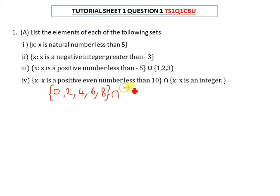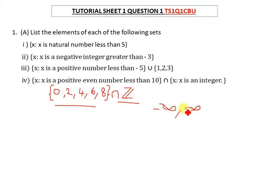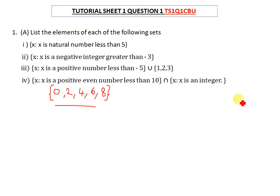When you find the intersection between {0, 2, 4, 6, 8} and the set of integers — which runs from negative infinity to positive infinity — all elements of our even number set are already integers. So the intersection gives us the same set: {0, 2, 4, 6, 8}. That is the answer for this question.